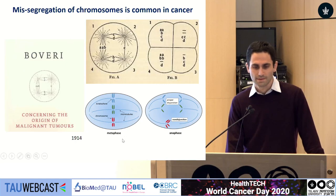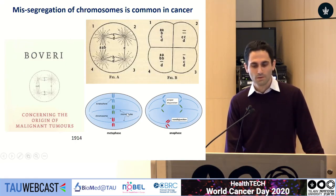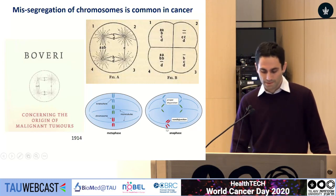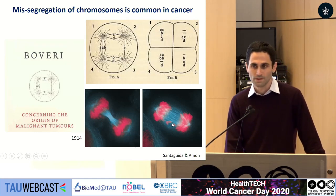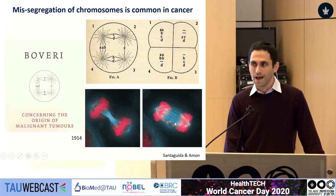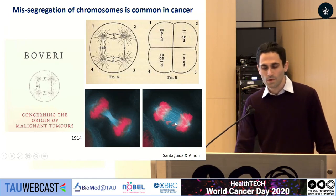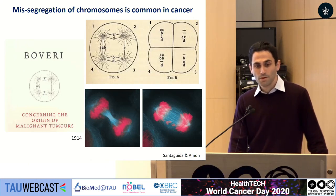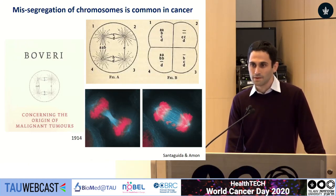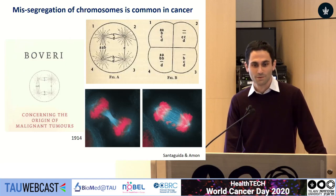This is how we would depict it today. During metaphase, the chromosomes need to be aligned so that they will be pulled to the two poles of the cells during anaphase. And when this goes wrong — when some chromosomes are lagging or are missegregated — the resultant cells are what we call aneuploid, cells with an abnormal number of chromosomes. Aneuploidy is so common in cancer that it is considered a hallmark of the disease.